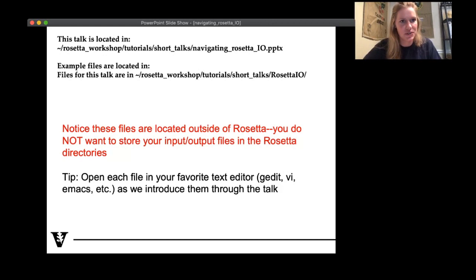So this talk is located in the Short Talks directory. It's called Navigating Rosetta IO PowerPoint. There's also a PDF version under the same name. And there's going to be a couple example files located in the Rosetta IO directory. We're going to run a couple simple commands to get you feeling more comfortable with how these things work. I have in red here, notice these files are located outside of Rosetta. You do not want to store any files of your own within the Rosetta directories. So what this means is you're going to have these things stored in a different location on your local drive, not within the actual Rosetta software.